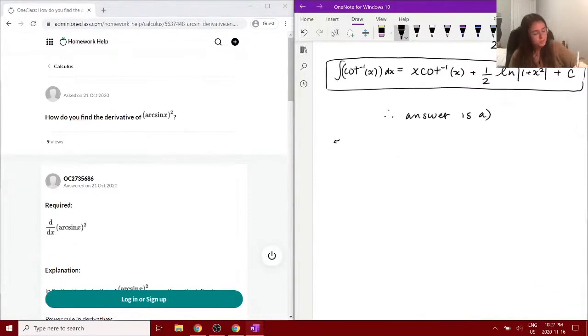All right, question number five. This question asks how to find the derivative of arc sine x all squared.